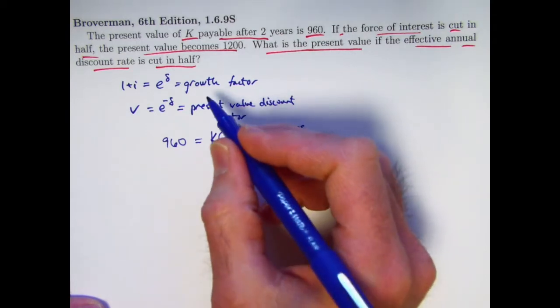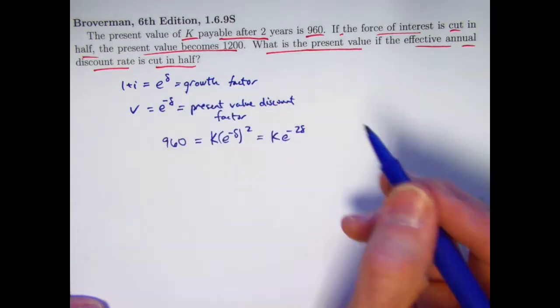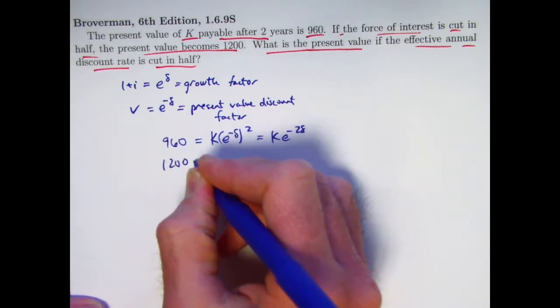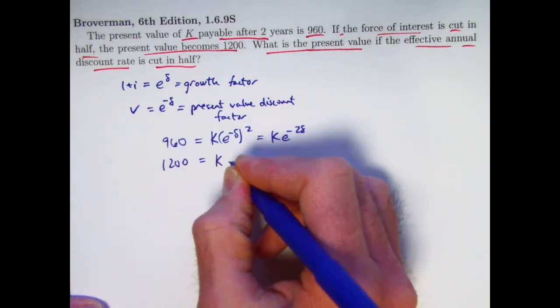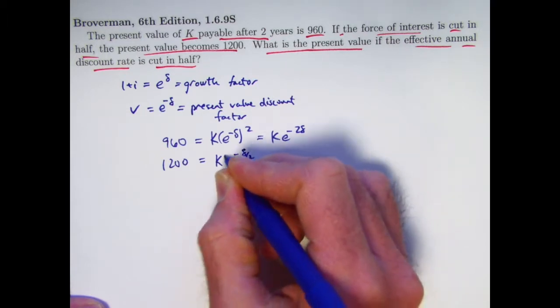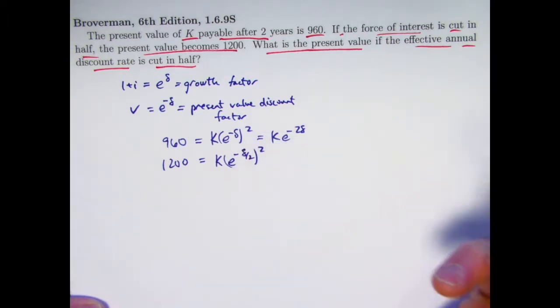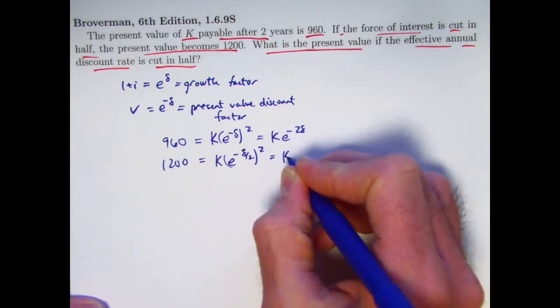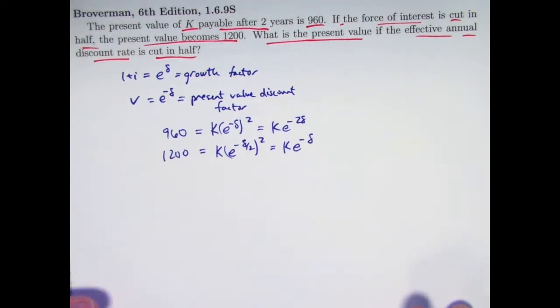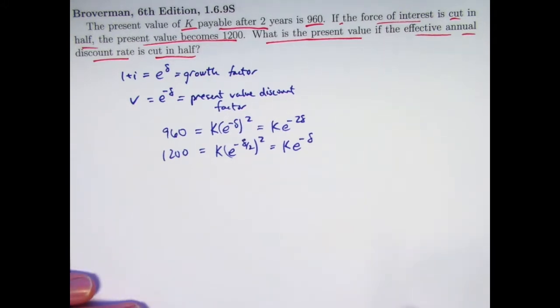If we cut the discount or the force of interest delta in half to make it delta over 2, the present value becomes 1200. And we can write this equation, which would simplify to this. Okay. So here's the two equations that follow from what we are assuming.